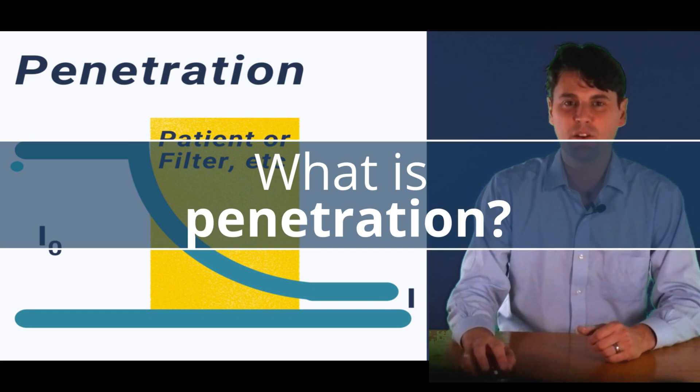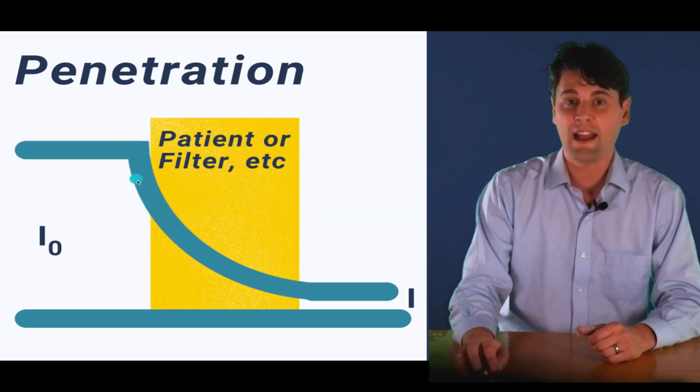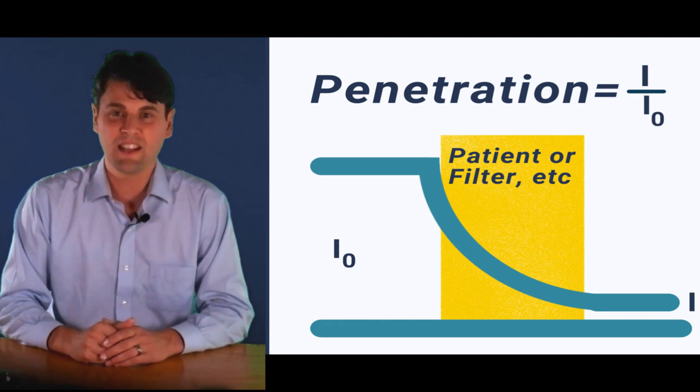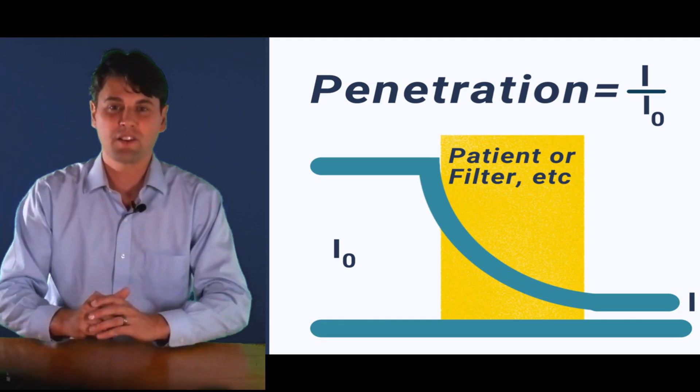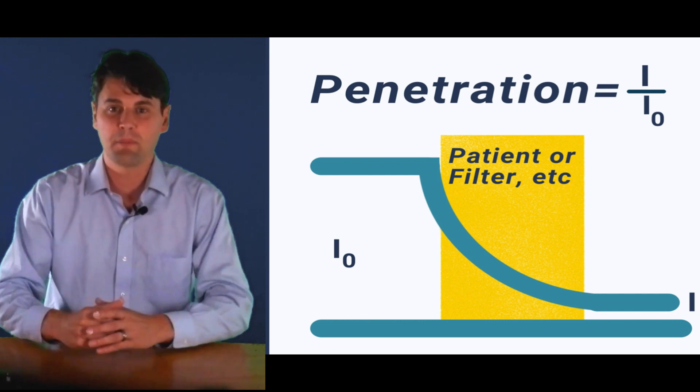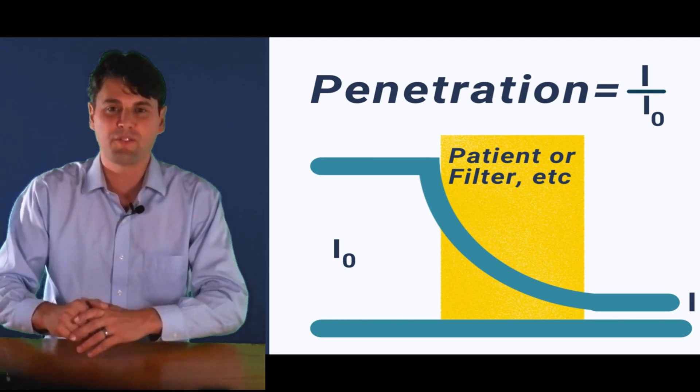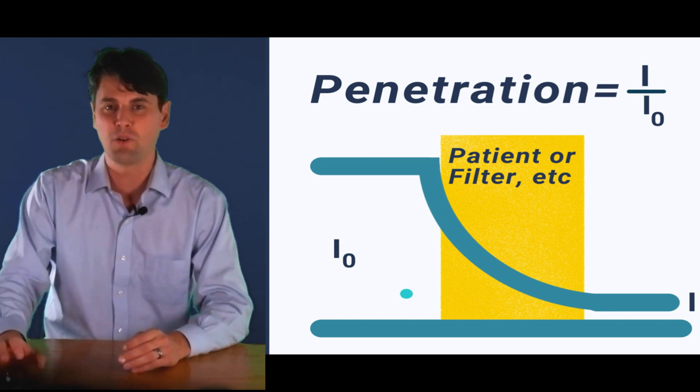So for x-rays, this leads to a distribution like this, where I0 x-rays are coming in and then those x-rays are going to be attenuated as they're going through, and then I x-rays are coming out. Penetration is actually how much x-rays are getting through. So I divided by I0 is the measure of your penetration, or the fraction of x-rays that are passing through the patient.